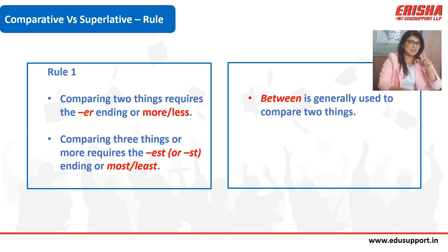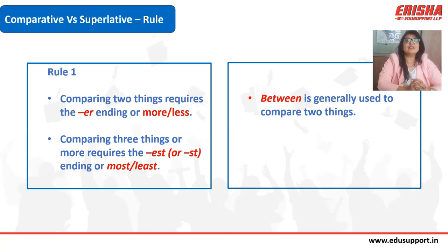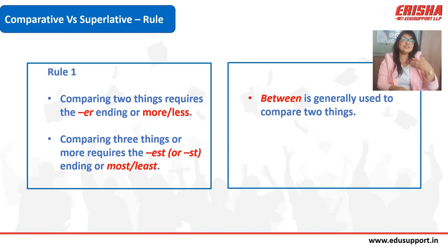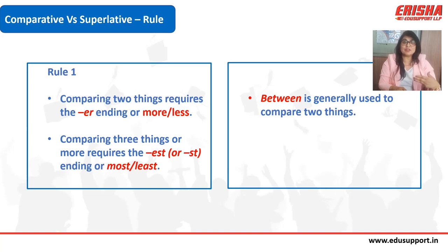Students often get confused about whether to use '-er'/'-est' or 'more'/'most.' The simple rule is: if a word has a single syllable, use '-er' or '-est.' For example, 'soft' is a single syllable word, so: soft → softer → softest.